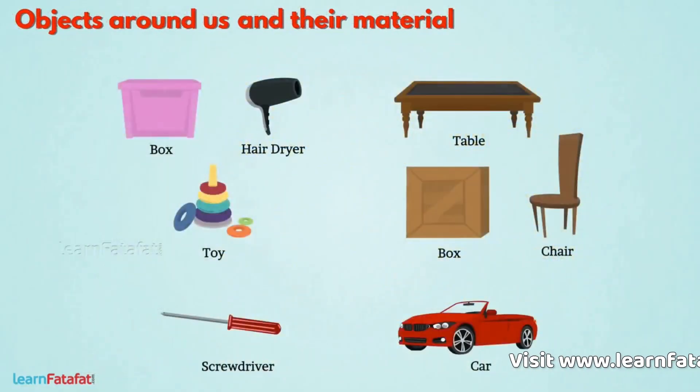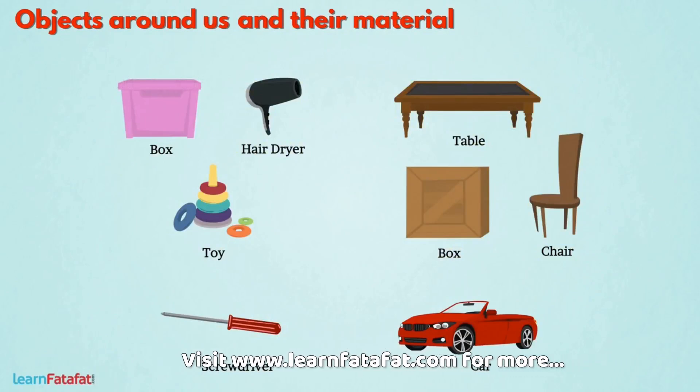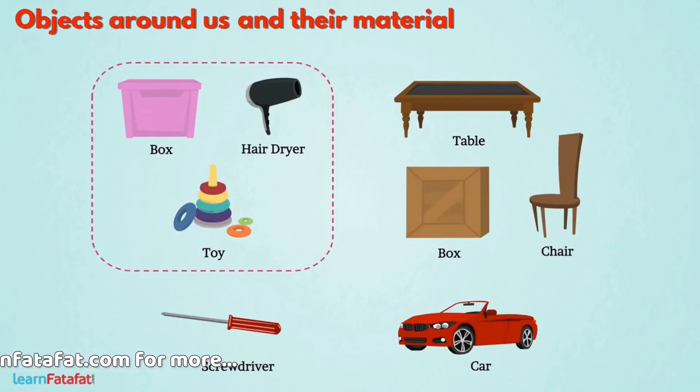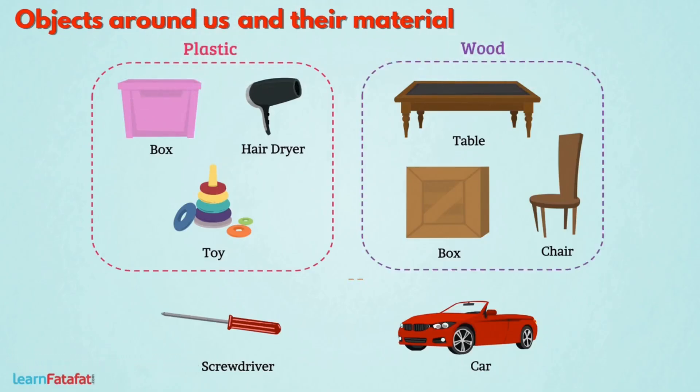Here are a few things. To classify, we will identify materials from which it is made. So, these are the things which are made of plastic. These are made of wood. And these are the things which are made from a combination of more than one material.